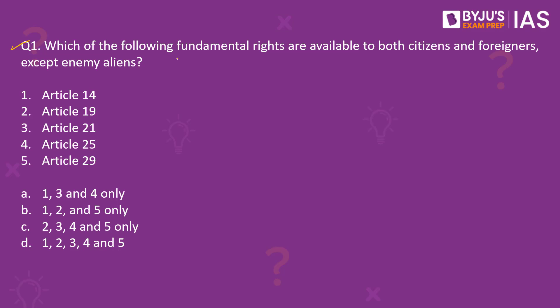Which of the following fundamental rights are available to both citizens and foreigners, except for enemy aliens? Article 14, 19, 21, 25, 29.